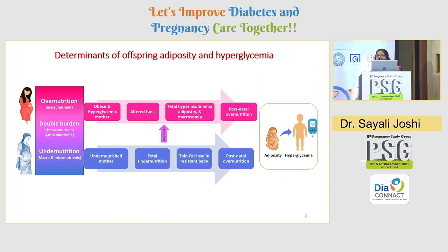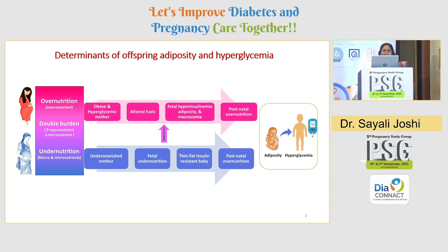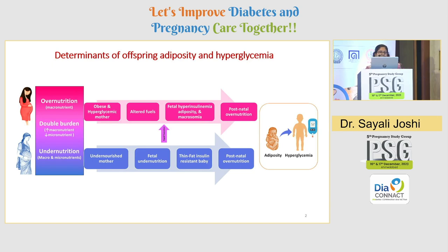We are all aware that maternal overnutrition as well as undernutrition are major determinants of offspring adiposity and hyperglycemia. If a mother is undernourished, she has a deficit in macronutrients as well as micronutrients. This results in fetal undernutrition, and the undernourished mother gives birth to a baby who is thin, fat, and insulin resistant. If this baby experiences postnatal overnutrition, it is at greater risk for developing obesity and hyperglycemia in later life.